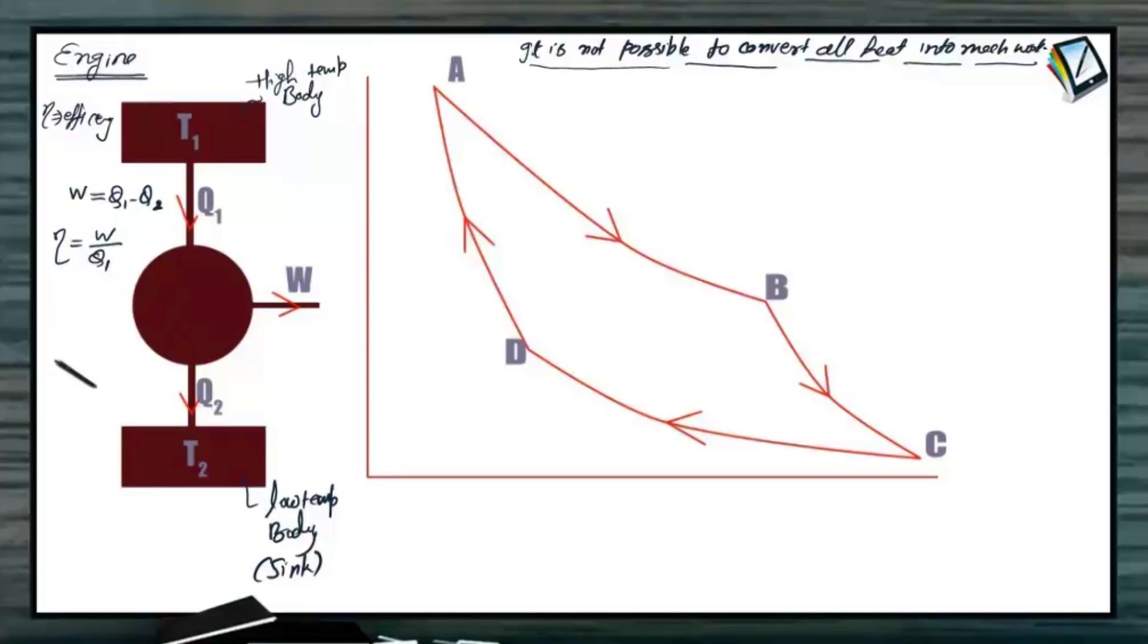W we know is Q1 minus Q2, so Eta, the efficiency, is equal to Q1 minus Q2 divided by Q1. And that is how Eta, the efficiency, can be written as 1 minus Q2 divided by Q1. So this is the relation of the efficiency of this particular engine.